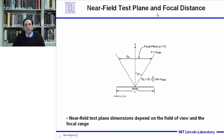This diagram shows the near field test plane and focal distance. D sub x is the length of the focal plane where we're distributing calibration sources, jamming sources, clutter sources, and target sources. If the array has length L, the total length required for the focus near field adaptive nulling testing is twice the aperture length times the f over L ratio times tangent of theta max, where theta max is the maximum angle away from broadside. So the near field test plane dimensions depend on the field of view and the focal range.